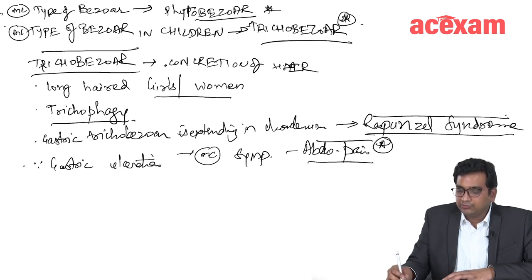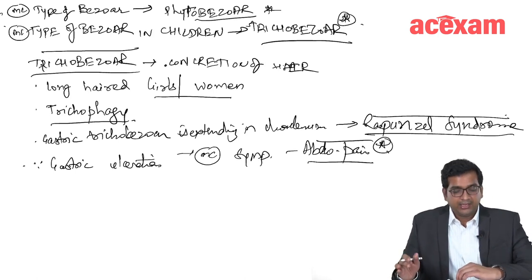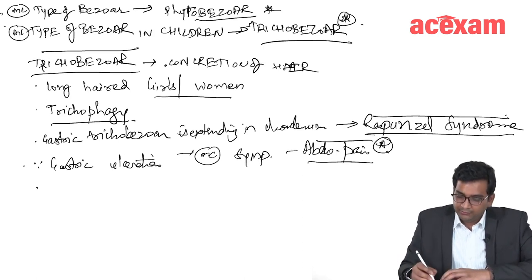Abdominal pain is the most common symptom in trichobezoars. And in few patients, it may also develop a gastric outlet obstruction.